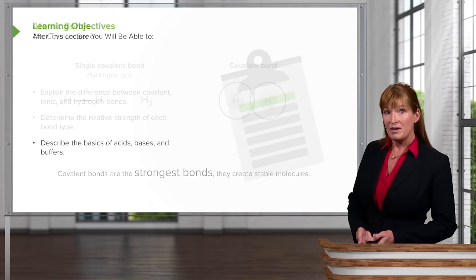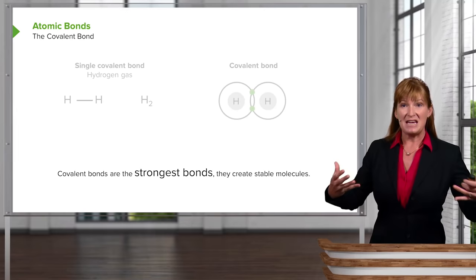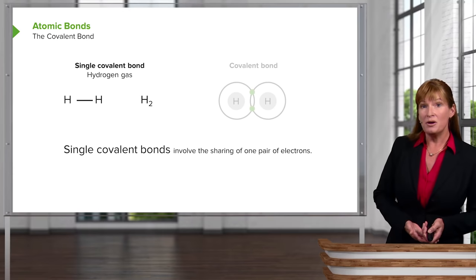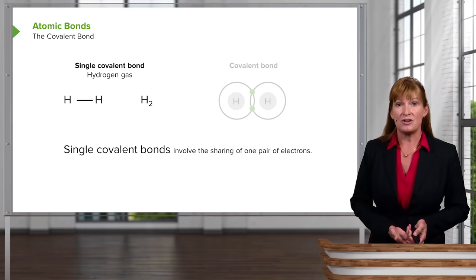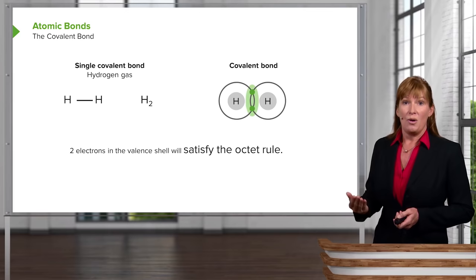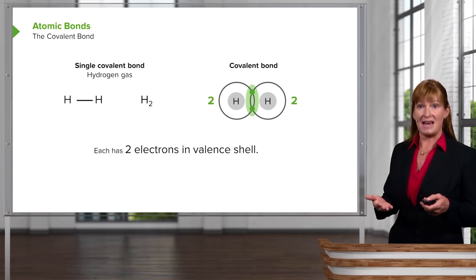Let's look at covalent bonds. Covalent bonds involve sharing of electrons — each atom has equal interest in the electrons between them. A single covalent bond involves the sharing of one pair of electrons. For example, let's look at hydrogen gas. Hydrogens alone have a single electron in the outermost shell, which gives them a valence of one because, ideally, to fill that innermost shell, they would like two electrons. So hydrogen will get together with another hydrogen, and they will each share the pair of electrons so that the octet rule is satisfied and each has a stable outer shell with two electrons.